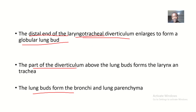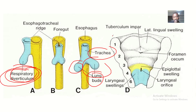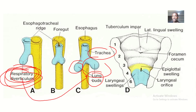To summarize: the laryngotracheal diverticulum and respiratory diverticulum are essentially the primordia of the lungs. From there we get the lung buds, from the lung buds we get the lungs, and the upper part of the lung buds forms the larynx and trachea. Beautiful story — see you guys in the next tutorial.